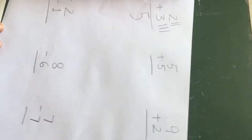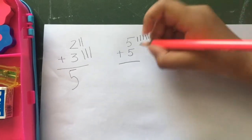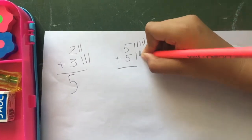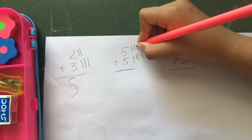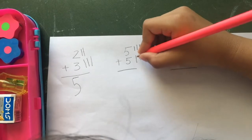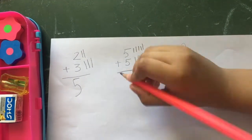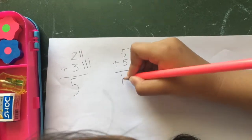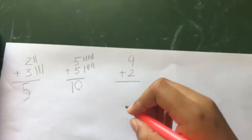Next. 5 plus 5 is 1, 2, 3, 4, 5. 1, 2, 3, 4, 5. So we have to do 1, 2, 3, 4, 5, 6, 7, 8, 9, 10. So we will write 10.